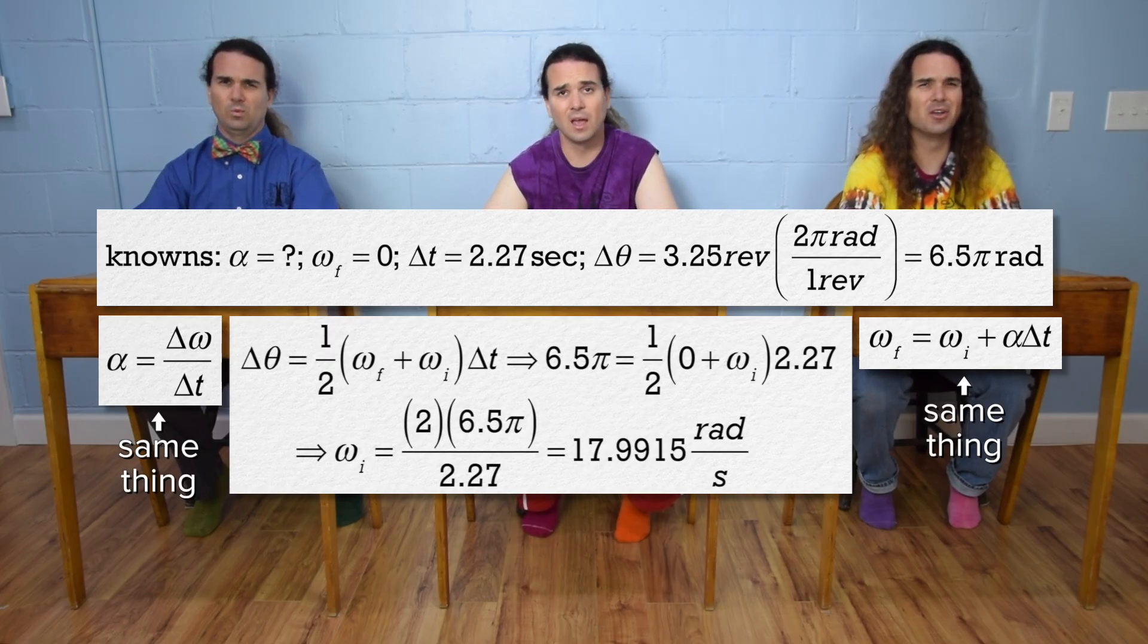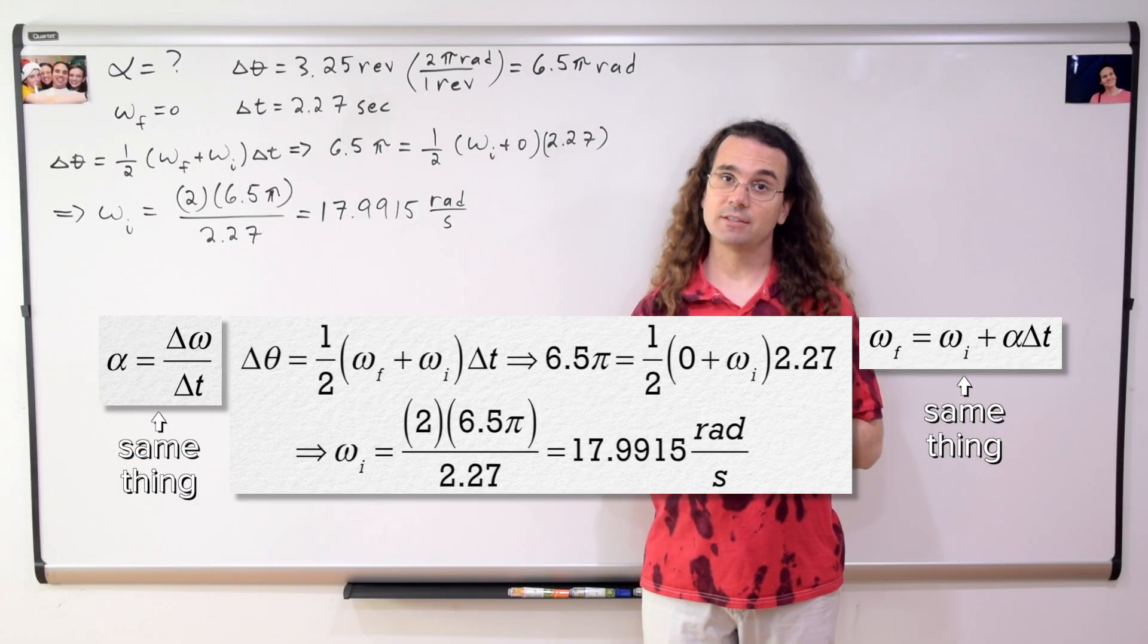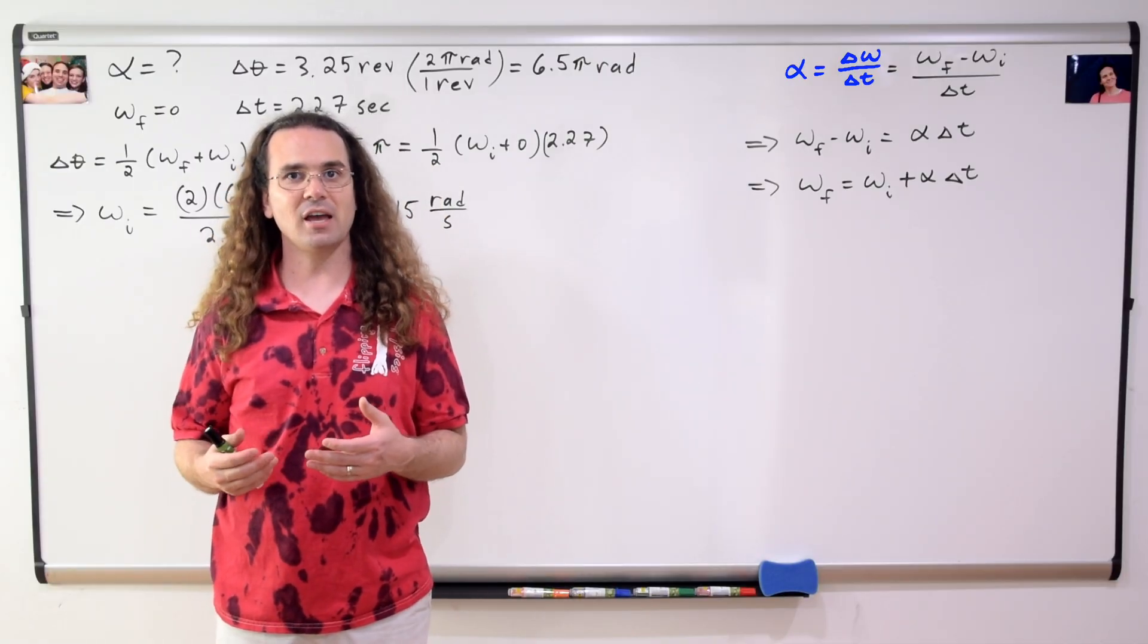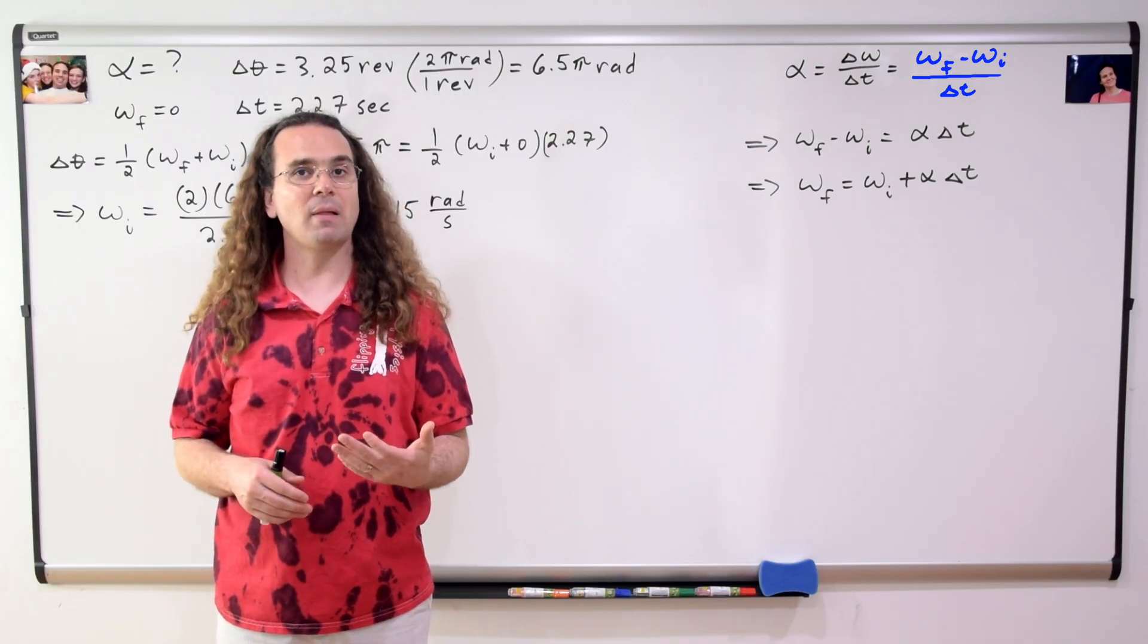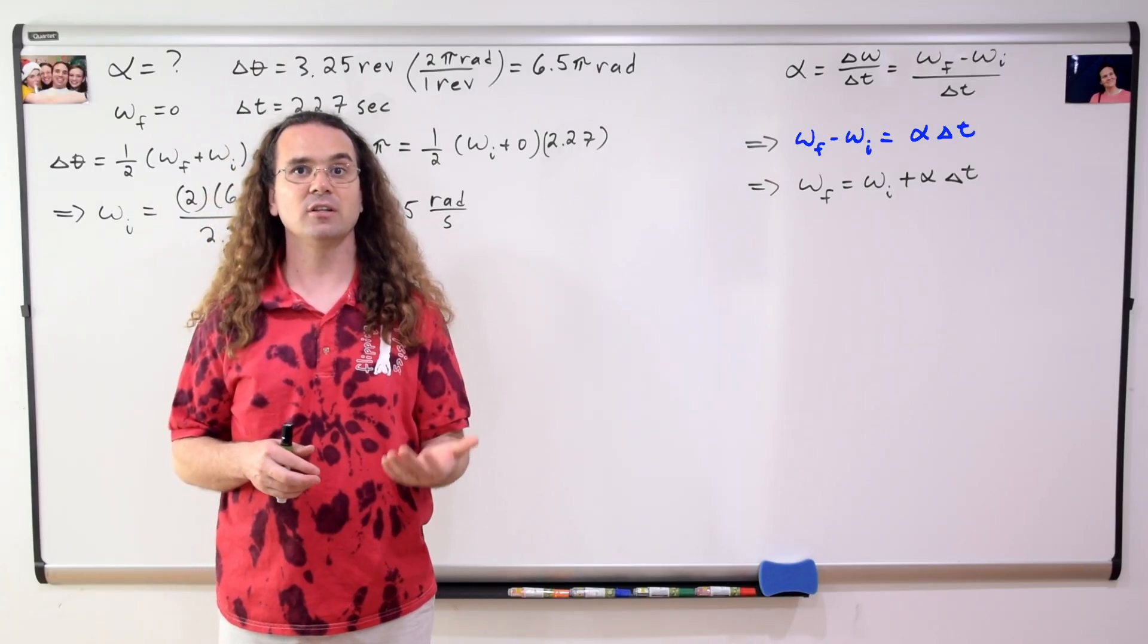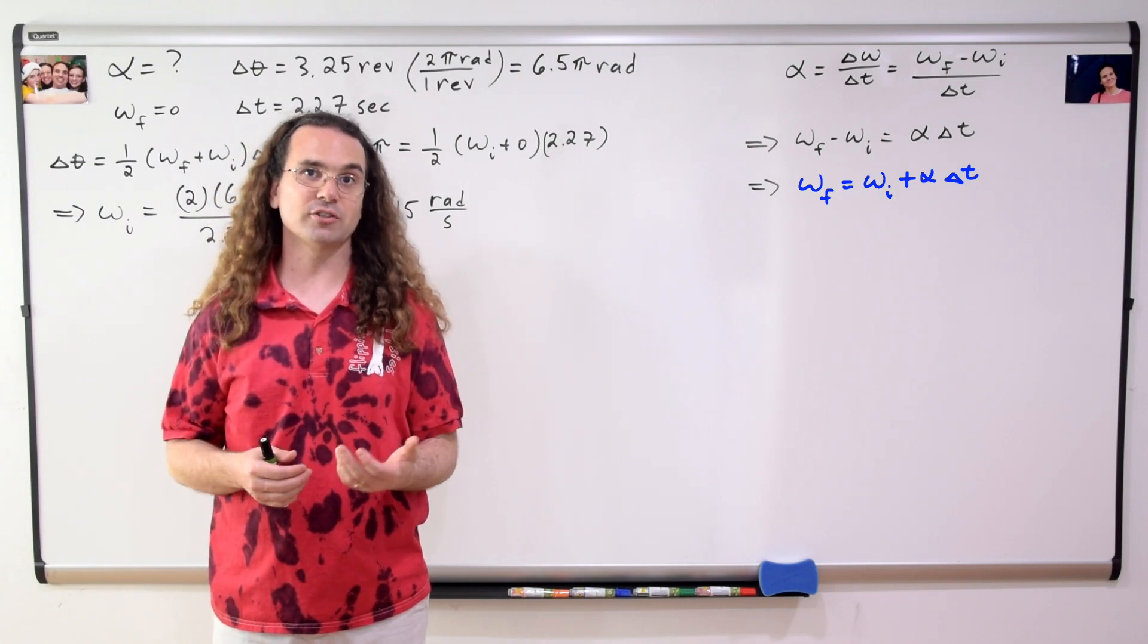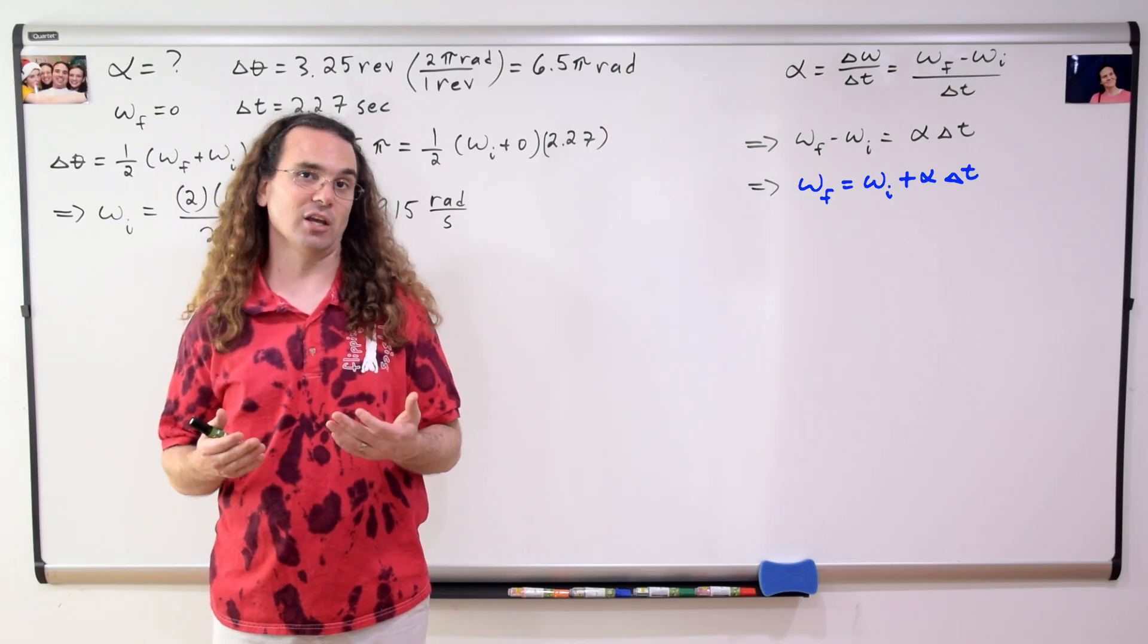They're the same thing. Bobby is correct. If you start with the equation definition, angular acceleration equals change in angular velocity over change in time, you get angular velocity final minus angular velocity initial over change in time. Multiply both sides by the change in time and you get angular velocity final minus angular velocity initial equals angular acceleration times change in time. Bring the initial angular velocity over to the other side and you get the uniformly angularly accelerated motion equation.